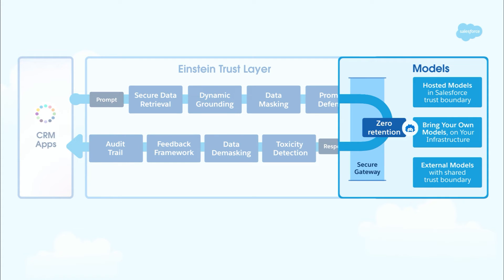If sent to external models like OpenAI, the data is encrypted and never stored externally. OpenAI, our first LLM partner, operates on a zero-retention basis for prompts. They also have a content moderation API that flags unusual or harmful content and alerts Salesforce of this immediately.